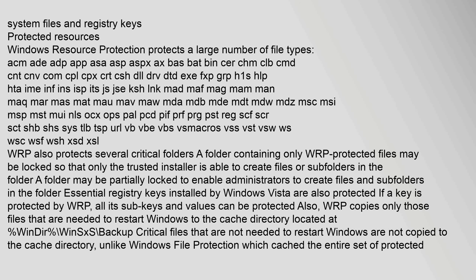Protected resources: Windows Resource Protection protects a large number of file types, including: ACM, ADP, APP, ASA, ASPX, AX, BA, BAT, BIN, CER, CHM, CLB, CMD, CNT, CNV, COM, CPX, CRT, CSH, DLL, DRV, DLL, FX, PGRP, H1S, HPP, HSL, INF, ISP, JS, KSH, LN, MAD, MAF, MAM, MAN, MAQ, MAR, MAS, MAT, MAU, MAV, MDA, MDB, MDE, MDT, MDW, MDZ, MSC, MSI, MSP, MST, MUI, NLS, OCX, OPS, PAL, PCD, PIF, PRF, PRG, PST, REG, SCF, SCR, SCT, SHS, SY, STL, SYS, URL, VB, VBE, VBS, VSM, VSS, VST, VSW, WS, WSC, WSF, WSH, XSD, XSL.